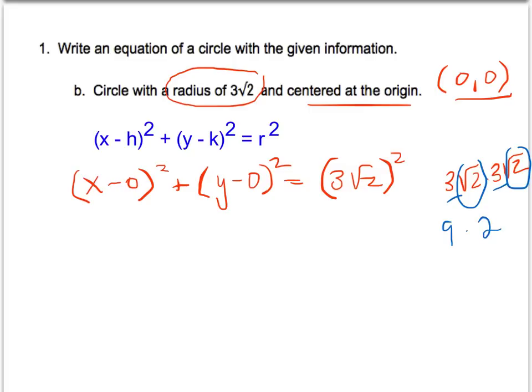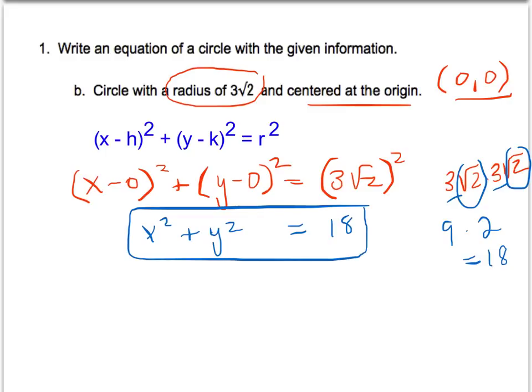Anytime you square a square root the radical symbol cancels out, so 9 times 2 is 18. The right side of this equation, my radius squared, is going to be 18. And then I'm just going to clean up the other side because when we have a circle that is centered at the origin we can just write it like this. And that's the final answer for the second problem.